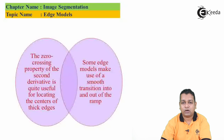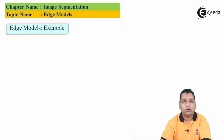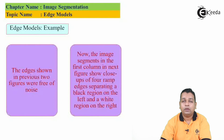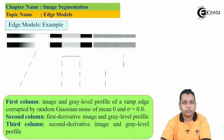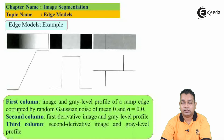Some edge models make use of smooth transitions into and out of the ramp. The edges shown in the previous figures were free of noise. The next figure shows close-ups of four ramp edges separating black regions on the left and white regions on the right. The first column represents the image and gray level profile of the ramp edge corrupted by random Gaussian noise with mean value μ=0 and sigma σ=0.0, meaning noise-free.